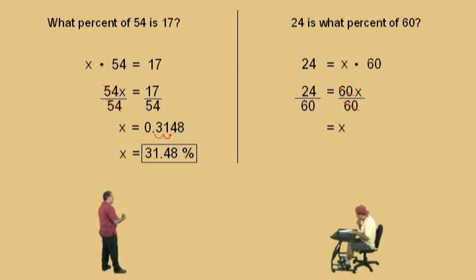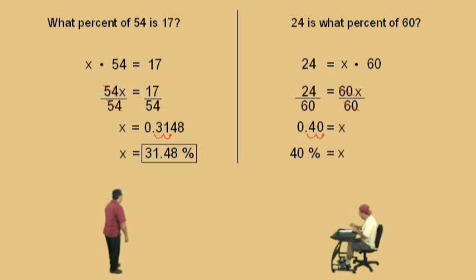And how do we write that as a decimal Charlie? 0.4. That's right, 0.4. And now remember, we were asked to find a percent because it said 24 is what percent? We're looking for a percent. How do we change a decimal to a percent? Move right twice. That's right. And so our answer is 40%. All right Charlie, let's keep going. Let's make it a tough one. Don't get scared.